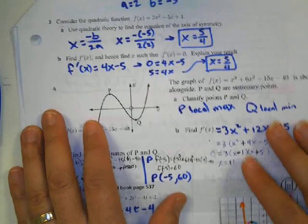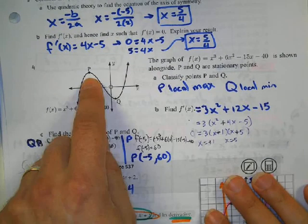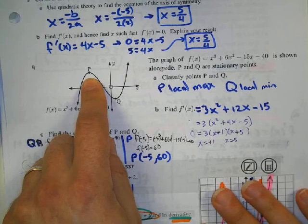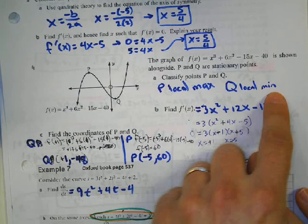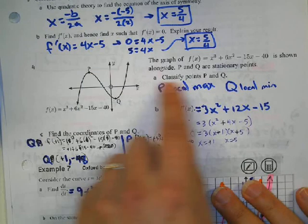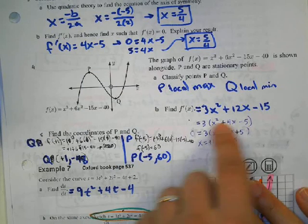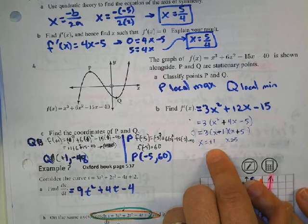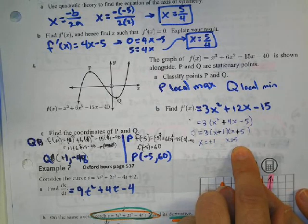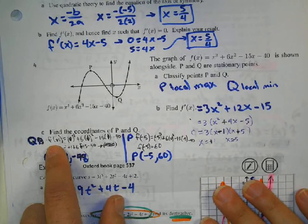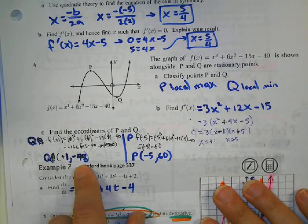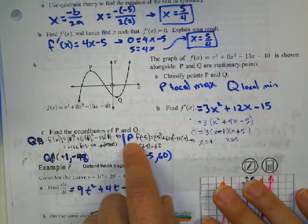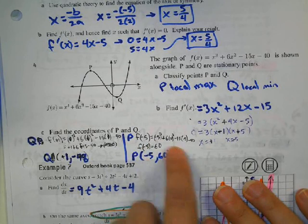Question 4: from the picture you can tell P is a local max and Q is a local min. Taking the derivative of this function and factoring, we know one zero is positive 1 and one zero is negative 5. To find Q, plug positive 1 into the original function to get its y-value. To find P, plug in negative 5 to get that value.